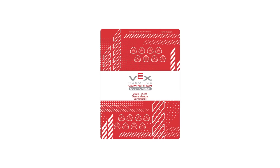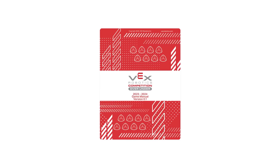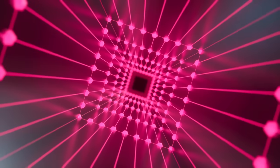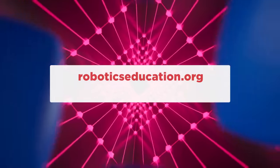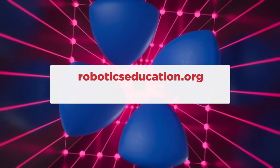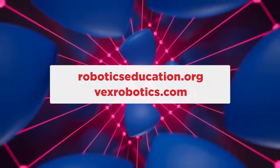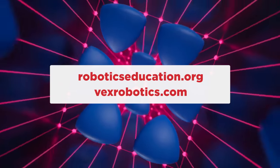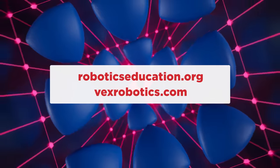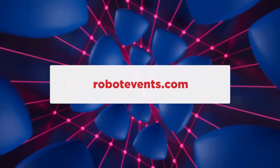Check out the game manual or talk to your REC Foundation team engagement manager for all the details. Official rules and game information for VRC over-under can be found at roboticseducation.org or vexrobotics.com. To register a team, find events near you, or ask a question on the official Q&A, please visit robotevents.com.